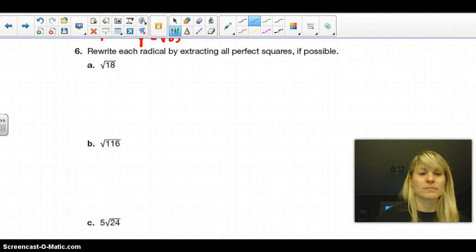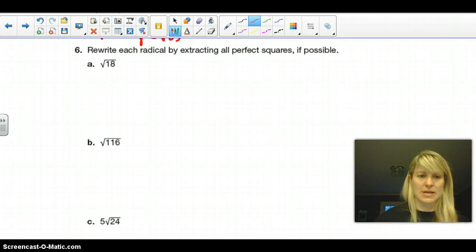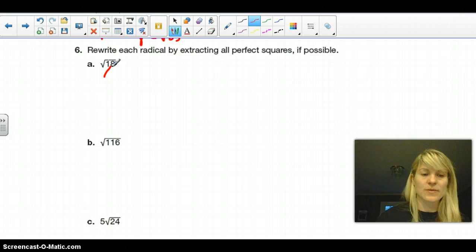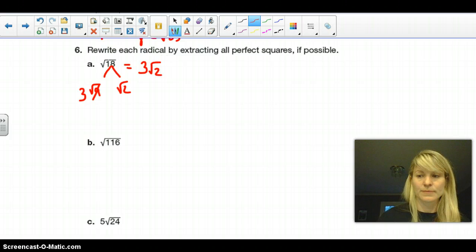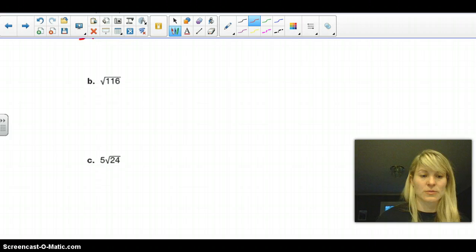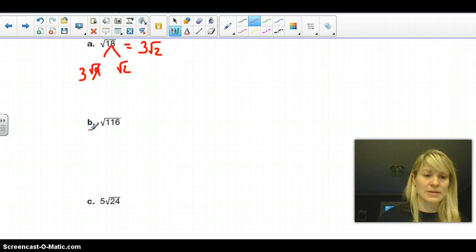And then here's some more practice with what we did yesterday, where we want to take this, and we want to find two factors of 18, preferably a perfect square. So here we have the square root of 9 times the square root of 2 is 18. I know the square root of 9 is the positive number of 3. 3 times 3 is 9. So I'm going to simplify this to 3 times the square root of 2. And I want you to complete b and c on your own.